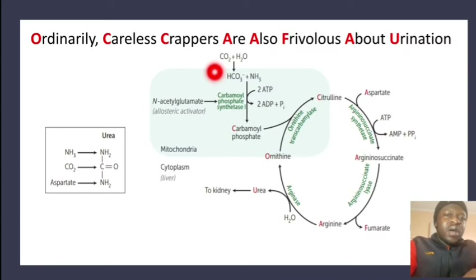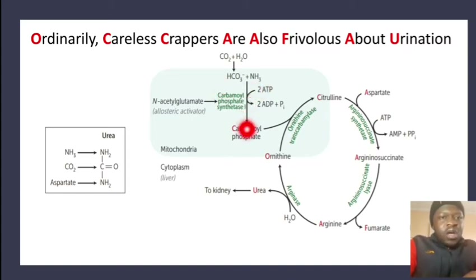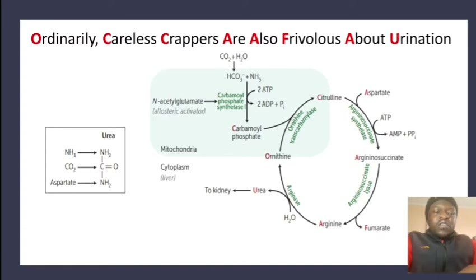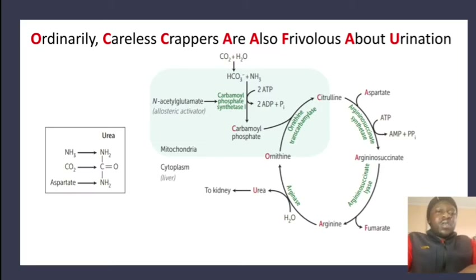Carbamoyl phosphate is formed from carbonic acid (water + CO₂) combined with ammonia, mediated by carbamoyl phosphate synthase I (found in the mitochondria, involved in the urea cycle). Carbamoyl phosphate synthase II is found in nucleotide synthesis (DNA/RNA). In this question, a disorder in this cycle causes high ammonia — hyperammonemia.